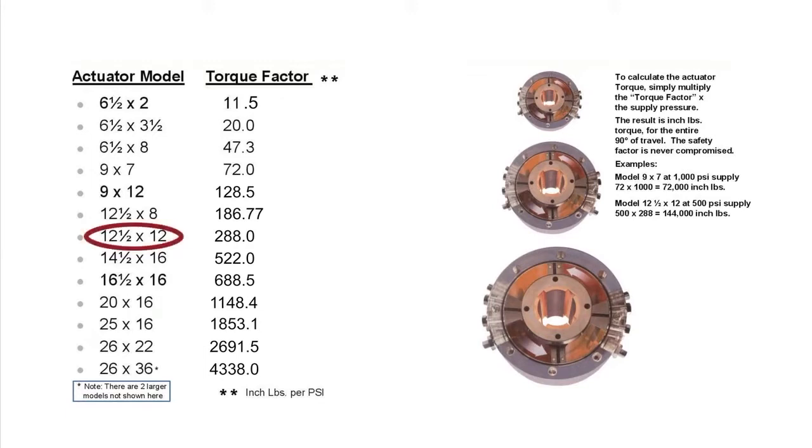The model 12 and a half by 12 has a torque factor of 288. Now I've used a supply pressure of 500 psi which results in the torque of 144,000 inch pounds. 500 times 288. This is how we match the actuator model to the required valve torque.